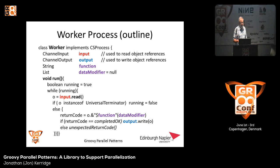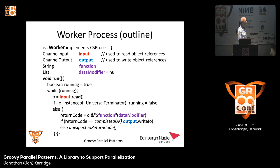What does the worker do? It has a channel input and a channel output — the channel implementations of CSP directly implemented by JCSP, with nicer mechanisms for defining them. We expect a string called function and a list that defaults to null. While running, we input an object; if it's an instance of universal terminator, then running becomes false and this process terminates. Otherwise, we carry out the function with the data, get a return code, and if the return code is completed okay, write out the modified object to the output channel. Otherwise, a method available throughout the system is called and causes it to stop.